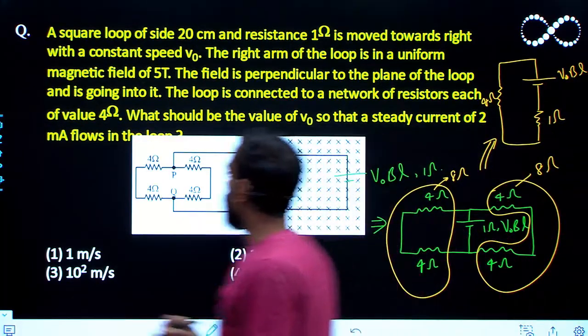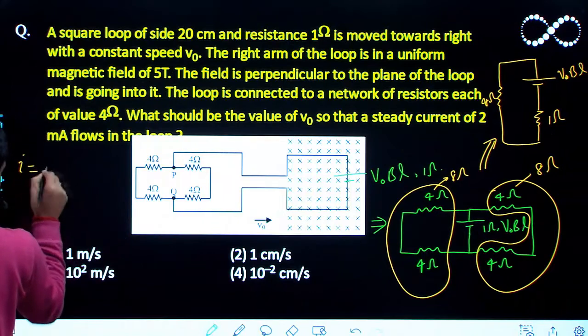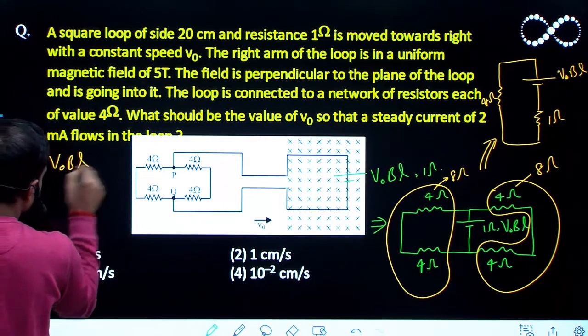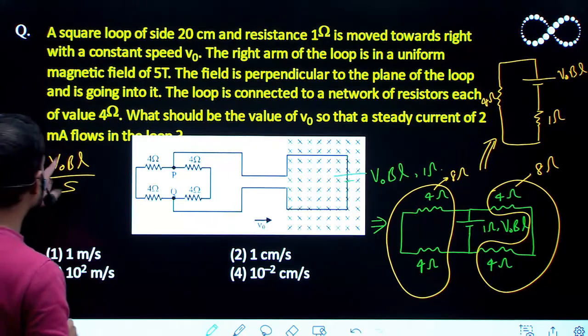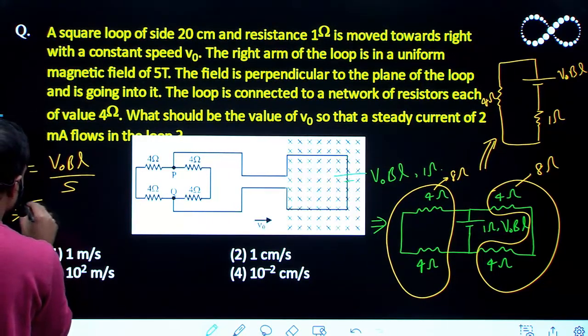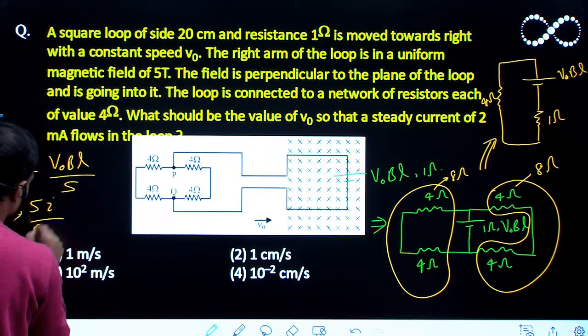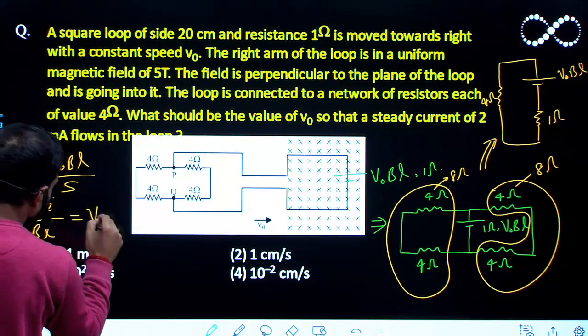If I say here the value of I will be equal to V0 BL upon 5 and value of I is given, so I need to find the V0 here. So I will say this is 5I upon B into L and that is your V0.